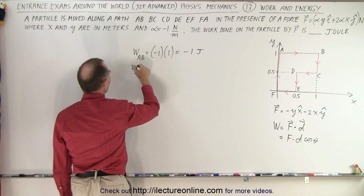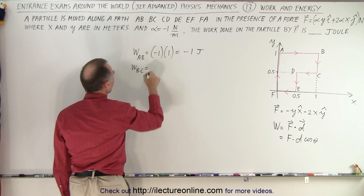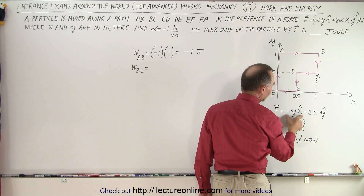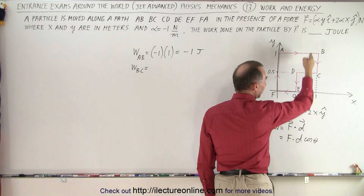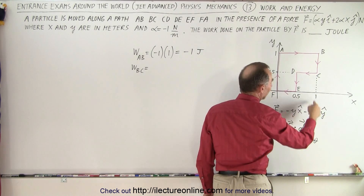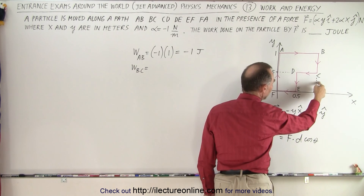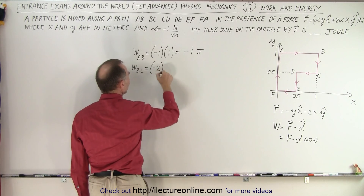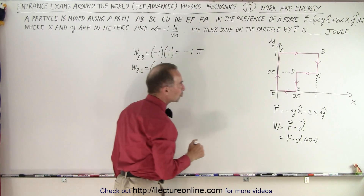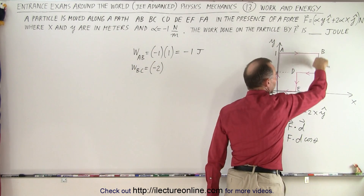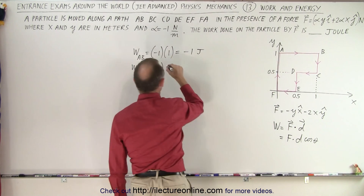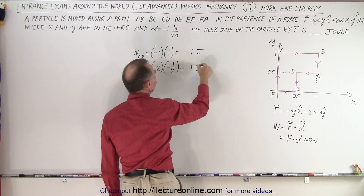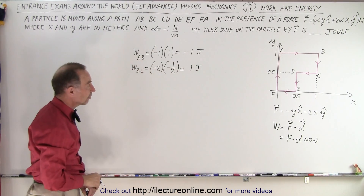Now we travel from B to C. We take only the Y component since we're traveling in the Y direction. The X value there is 1, so the force is −2×1 = −2. We travel in a negative direction — a displacement of −½ — so multiplying: (−2)×(−½) = positive 1 joule of work done from B to C.